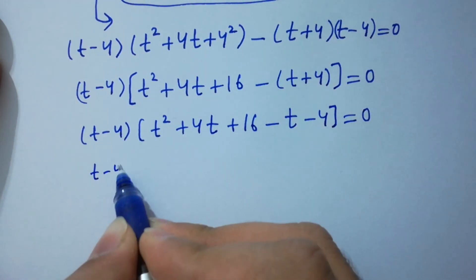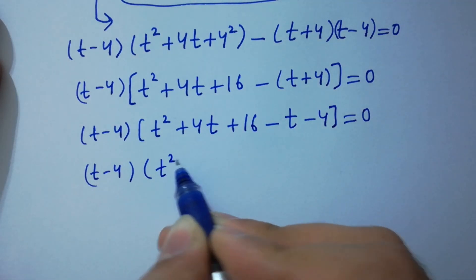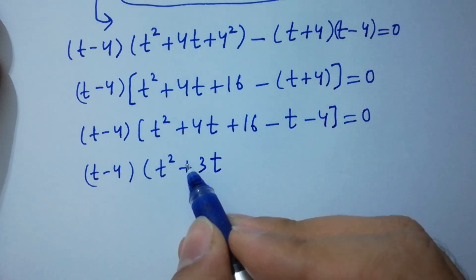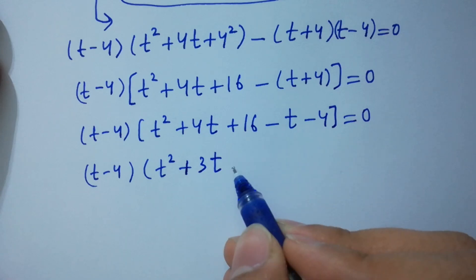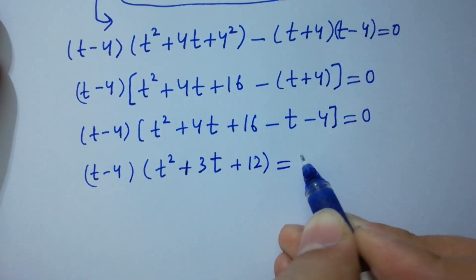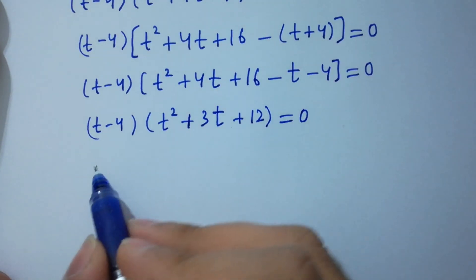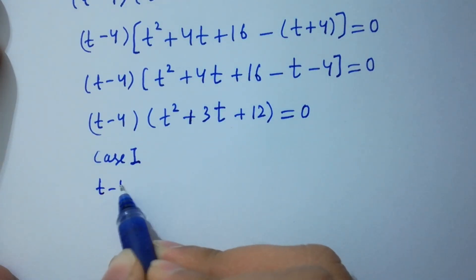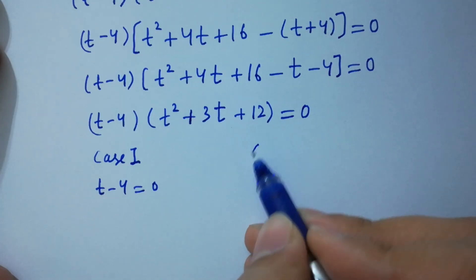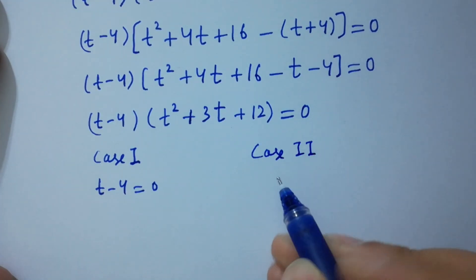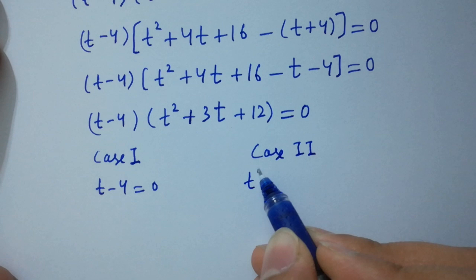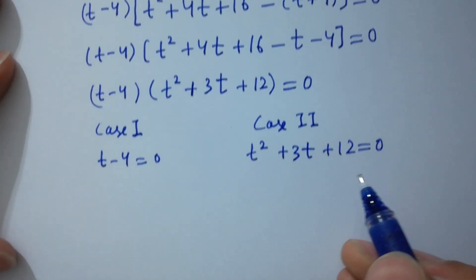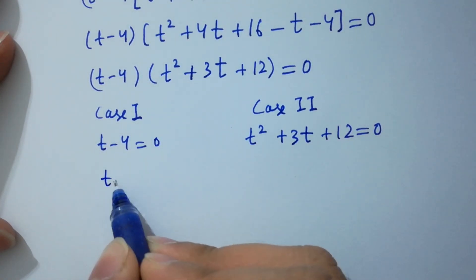Taking (t - 4) as common factor, we get (t - 4)(t² + 4t + 16 - t - 4) = 0, which simplifies to (t - 4)(t² + 3t + 12) = 0. So we have two cases. Case one: t - 4 = 0, giving t = 4.